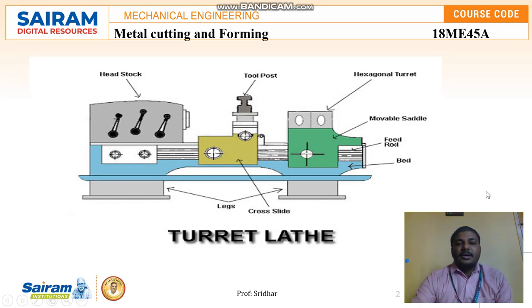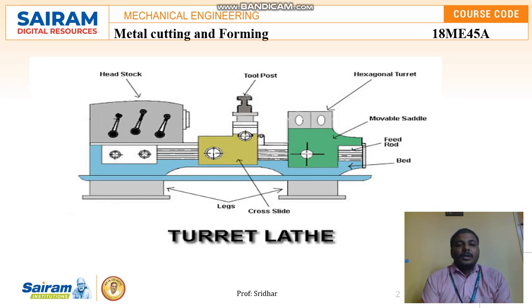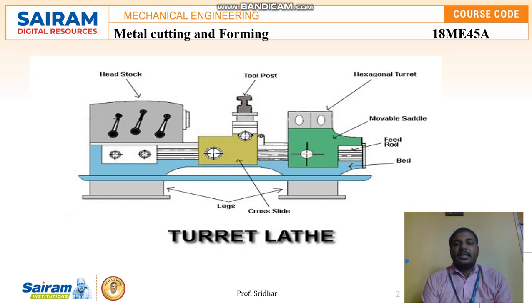The movable saddle can be manually pushed towards the headstock to fix the workpiece between the headstock and the hexagonal turret. The hexagonal turret is like a hexagonal bolt — you loosen that bolt and fix the workpiece from one end for support. The function of the tool post is to hold the tool rigidly for good machining. The hexagonal turret is mounted on the movable saddle, and that saddle moves towards the headstock.